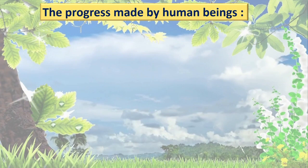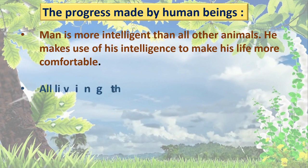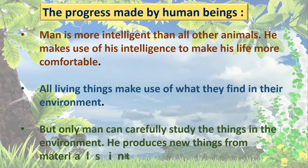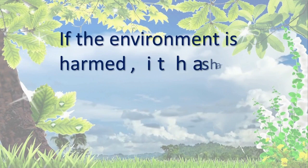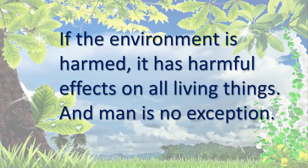The progress made by human beings — man is more intelligent than all other animals. He uses his intelligence to make his life more comfortable. All living things use what they find in their environment, but only man can carefully study the environment and produce new things from its materials. If the environment is harmed, it has harmful effects on all living things, and man is no exception. We studied this in Part 1 of this lesson.